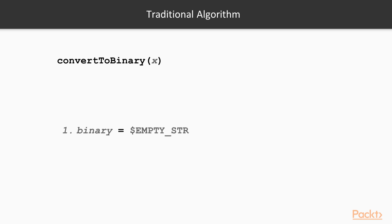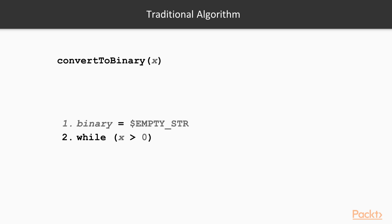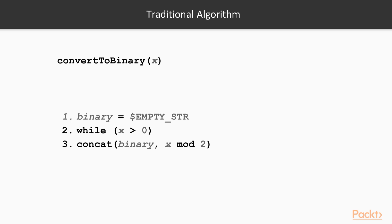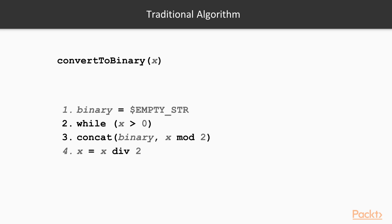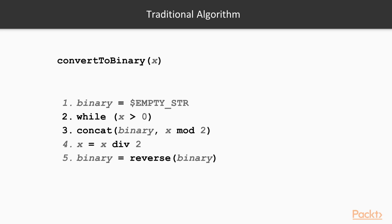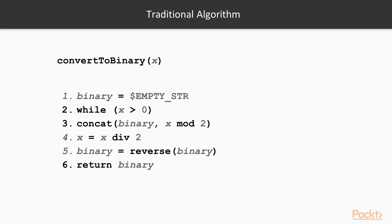We start by defining a function that takes x, our number to convert. We initialize our binary string with an empty placeholder, and at the end we return it. We then create a loop that repeats as long as x is greater than 0. We use the modulus operator to give us the remainder and append it to the binary string. We also divide by 2 and assign it to x. Once x is 0, we exit the loop, simply reverse the string, and then return it.